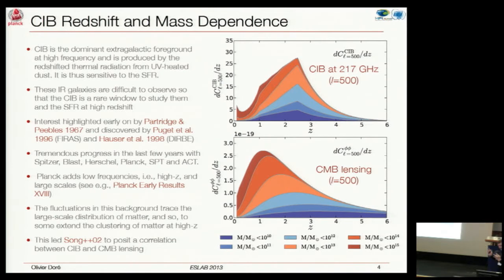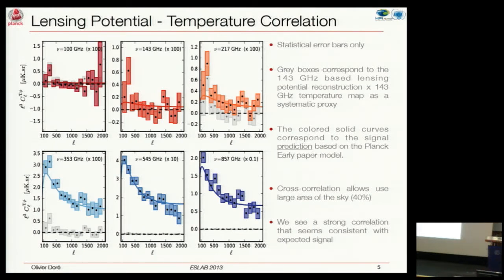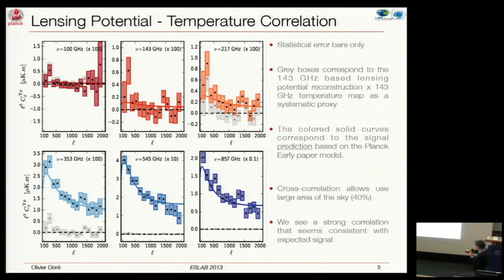If you just take the maps Karim presented and correlate them with the dust map I showed you, you end up with this cross-correlation spectra—L^3 as a function of L—for six frequencies from 100 GHz all the way up to 857 GHz. This is just a raw estimator with no work applied. And it's very important to realize that because we are working in cross-correlation, we are really not sensitive to galactic dust, which is a limiting factor when studying the CMB. So it's a very robust measurement and we can measure all the way to very small scales.